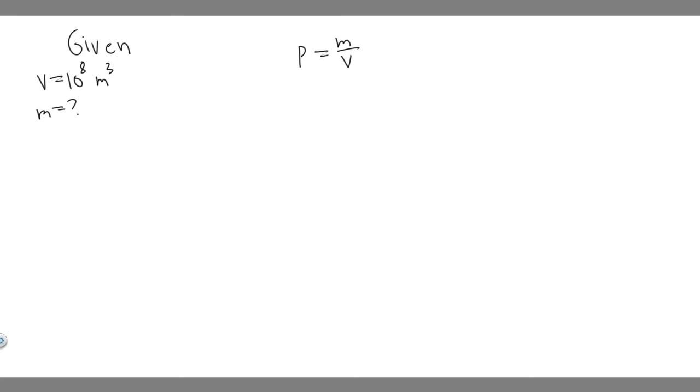Keep in mind what we're trying to solve for here. We're trying to solve for the mass. We're given the volume, and we're not given the density directly, but if you look in one of the tables in your textbook, it should give it to you. So rho is going to equal the density of granite, because the object is made out of granite.